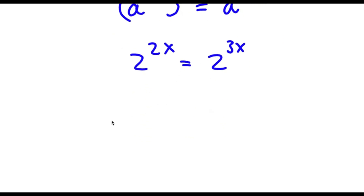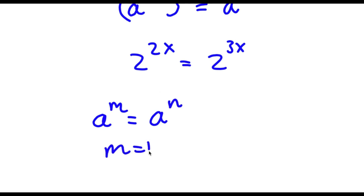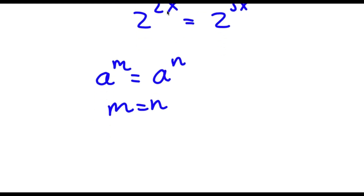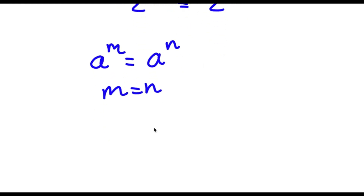Now if I have something in the form a to the power of m is equal to a to the power of n, this means that m is equal to n. So in this case, 2x is equal to 3x.